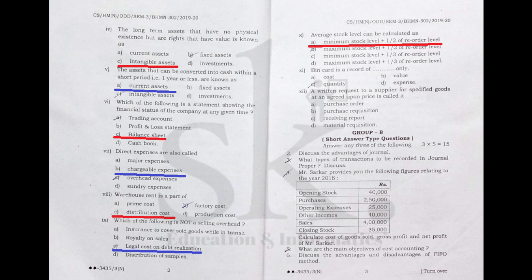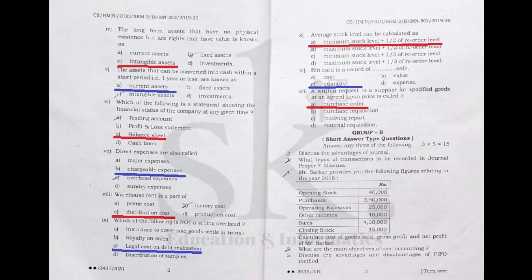Question number eleven: a bin card is a record — a bin card normally records quantity, so the correct option is C. Question number twelve: a written request to a supplier for specified goods at an agreed price is called a purchase order, because a purchase order specifies the products required and their stated price. The correct option is A. This concludes the 2019 paper.